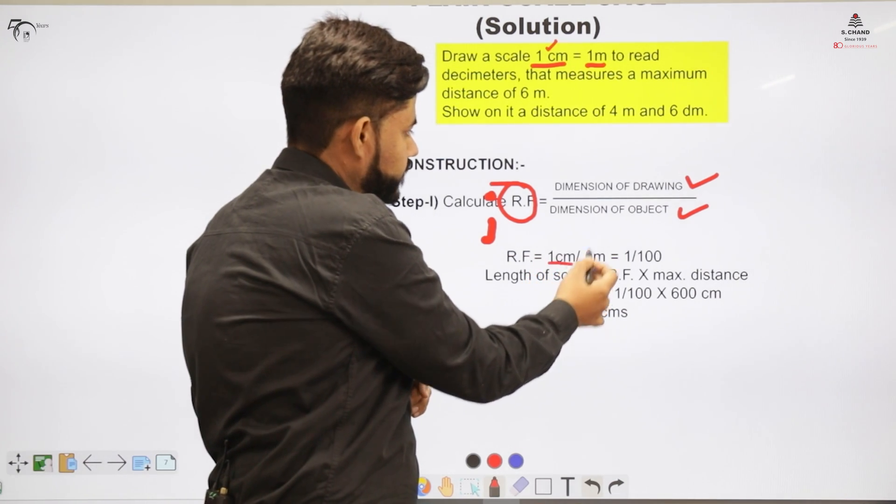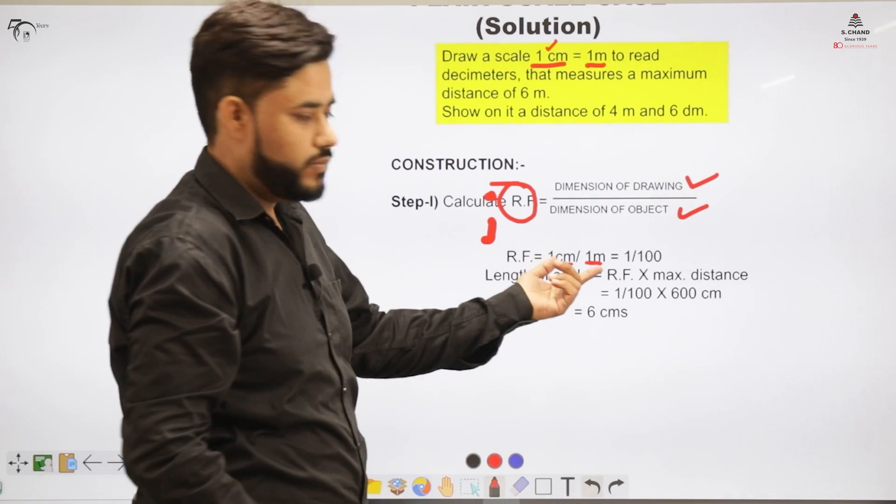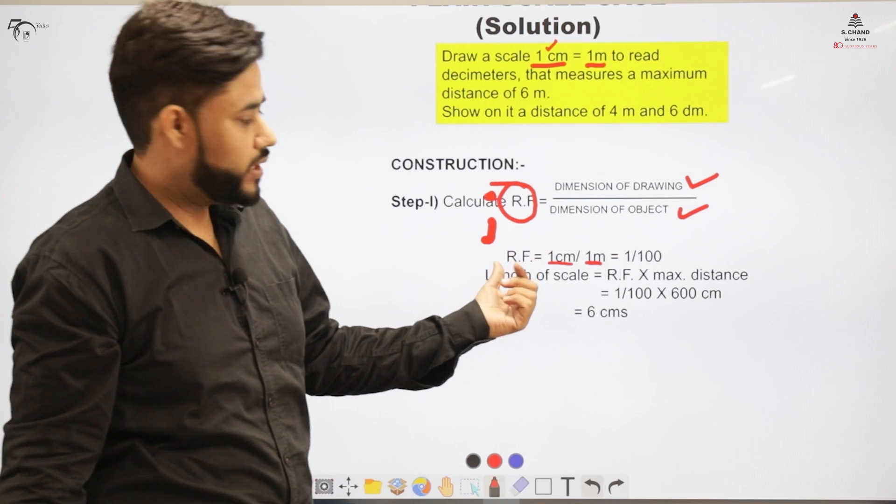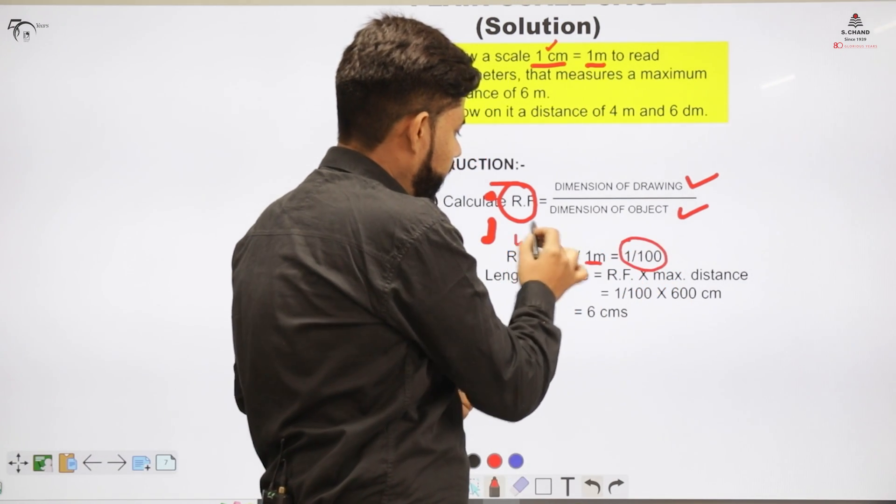So 1 centimeter would be this dimension on the drawing and the dimensions of the object is 1 meter. I will convert this 1 meter into centimeter and I will get 1 by 100 as my RF value. So RF value is 1 by 100.